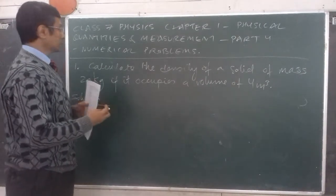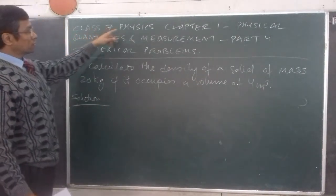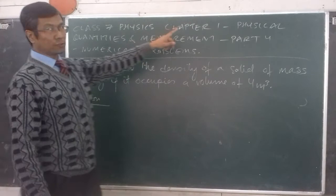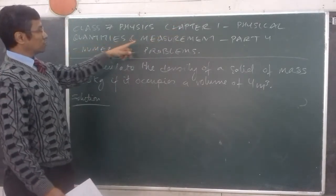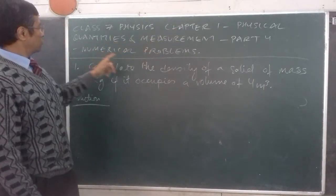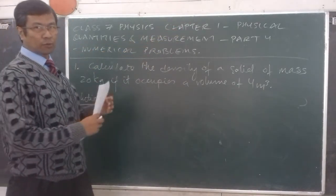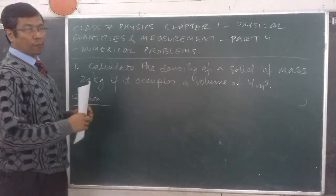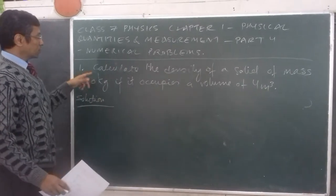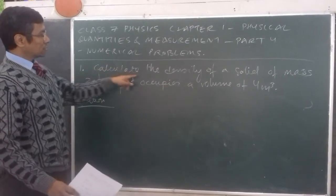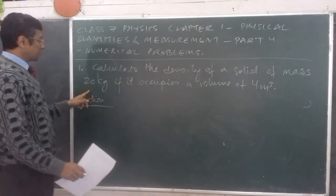Hello students, today we're doing Class 7 Physics Chapter 1 - Physical Quantities and Measurement, Part 4. We'll be discussing numerical problems. The first question we're doing today is: calculate the density of a solid of mass 20 kg.